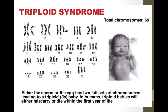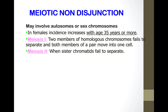In triploid syndrome, either the sperm or the egg has two full sets of chromosomes, leading to a triploid baby. In humans, triploid babies will either miscarry or die within the first year of life.